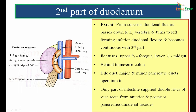The second part of the duodenum extends from the superior duodenal flexure, passes down to L3 vertebra, and turns left forming the inferior duodenal flexure to become continuous with the third part. Its upper half develops from the foregut up to the opening of the major duodenal papilla; the remaining lower half develops from the midgut. It lies behind the transverse colon. The bile duct and the major and minor pancreatic ducts open into its interior. It is the only part of the intestine supplied by two rows of vasa recta arising from the anterior and posterior pancreaticoduodenal arcades.